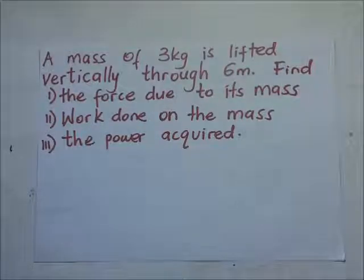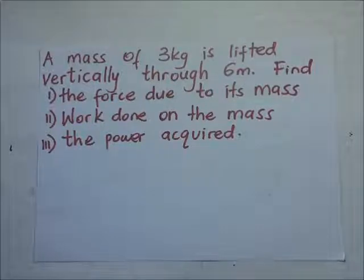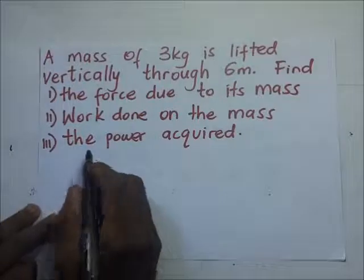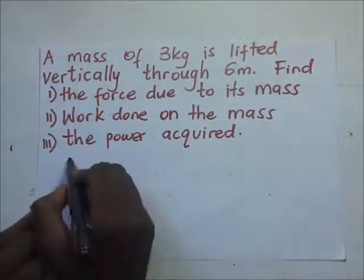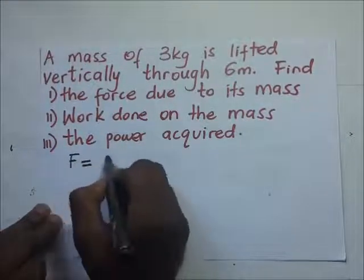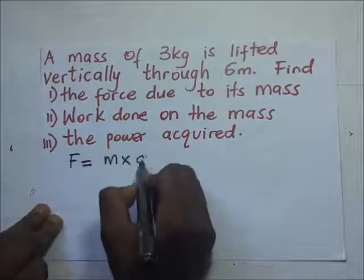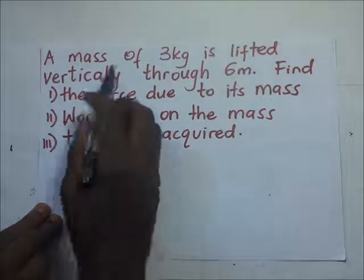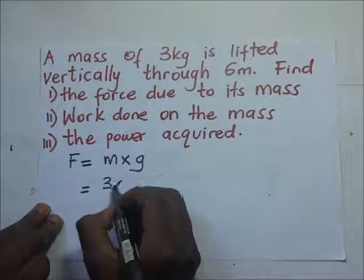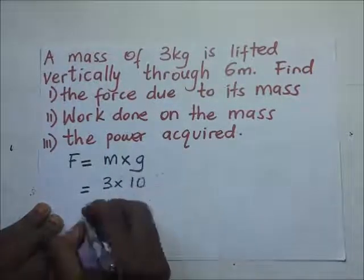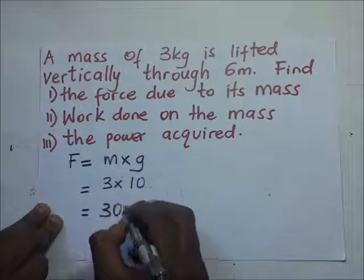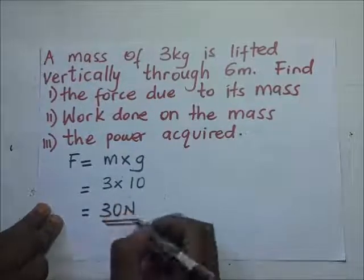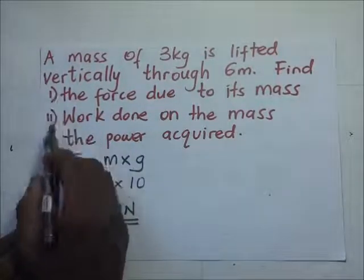A mass of 3 kilograms is lifted vertically through 6 meters. Part one: find the force due to its mass. The formula for force is mass times gravity. The mass is 3 kilograms, so it's 3 times 10, which equals 30 newtons.